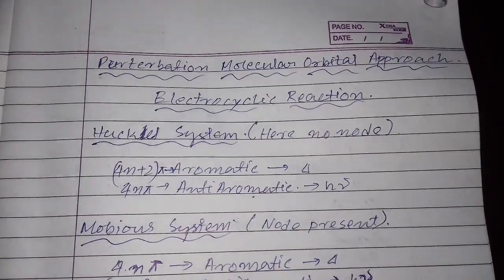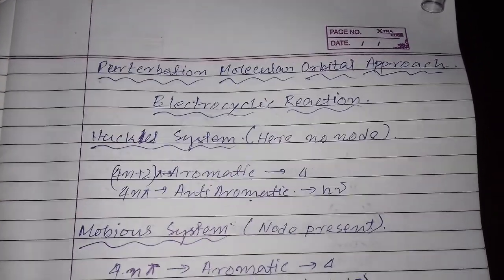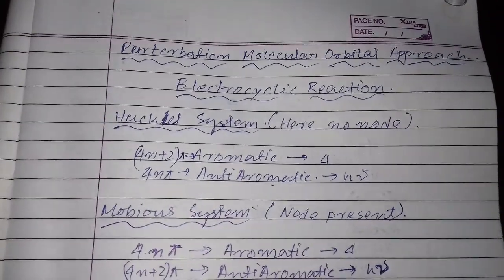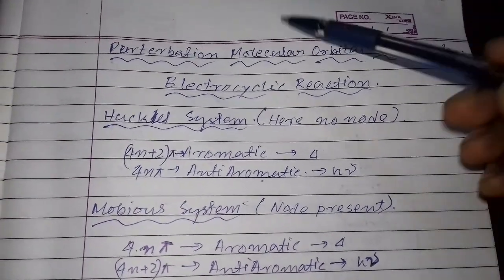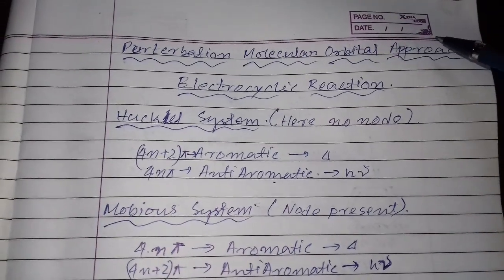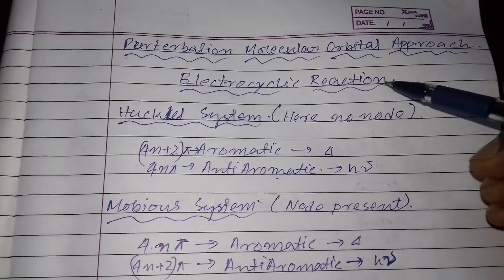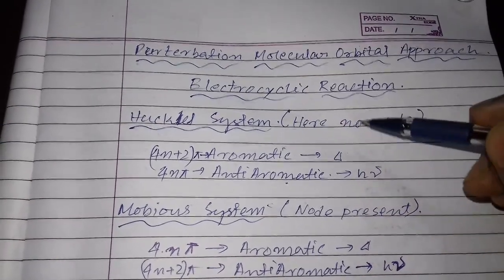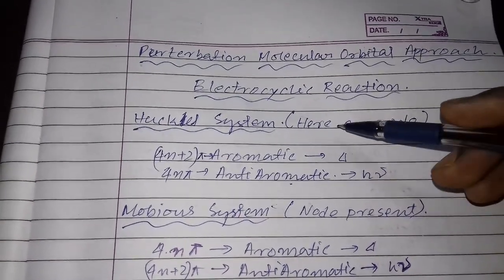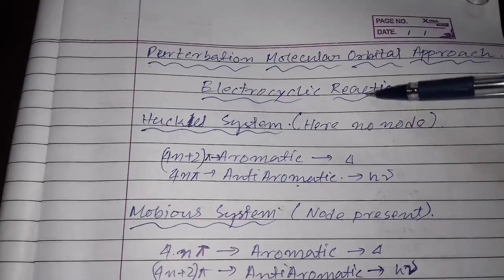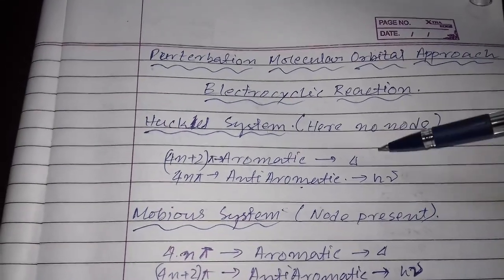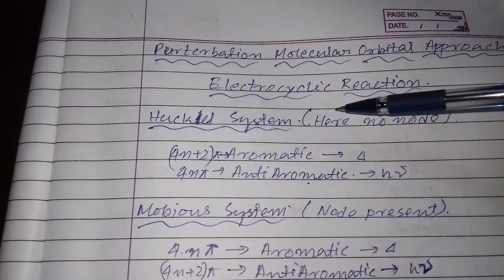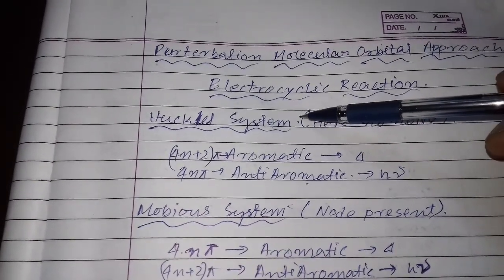Today's explanation is on the perturbation molecular orbital approach of the electrocyclic reaction. Here we mainly examine the aromaticity of the reactants and products. In aromaticity there are two systems: one is the Hückel system.